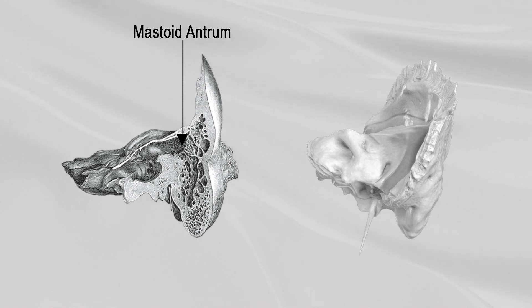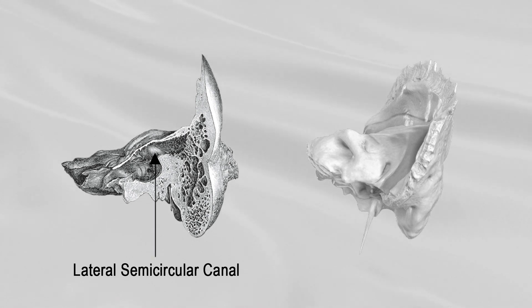Mastoid antrum is a large, irregular cavity, situated at the upper and front part of the bone. It communicates with mastoid cells. It is bounded above by a thin plate of bone, the tegmen tympani, and medially by the lateral semicircular canal of the internal ear.